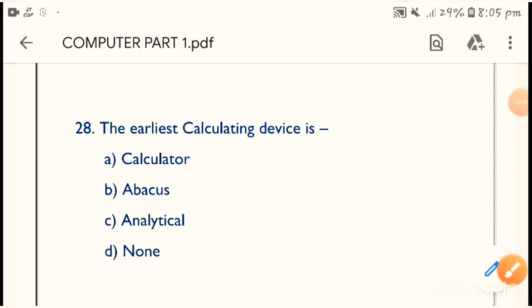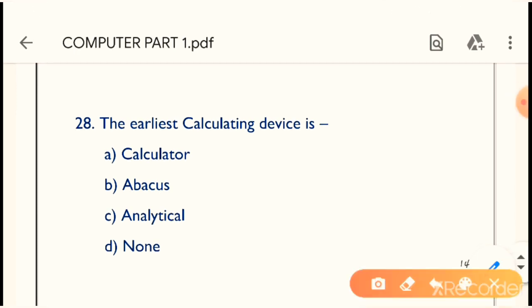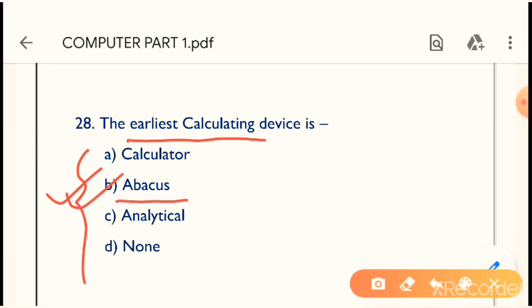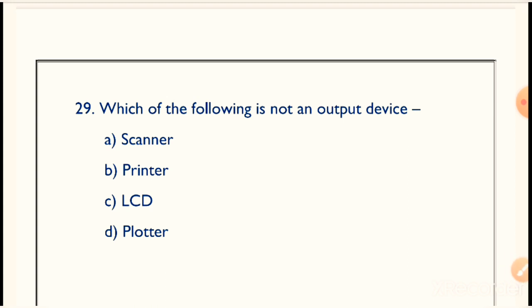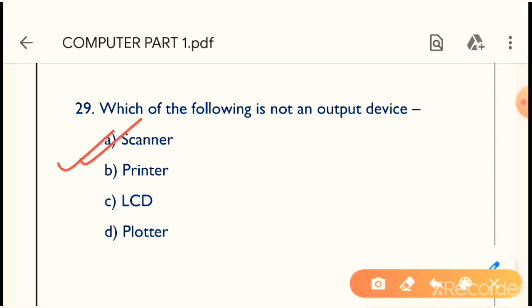Question 28: The earliest calculating device is what? What is the oldest calculating device? The correct answer is Abacus. Option B is the correct answer — Abacus is the most oldest calculating device. With Abacus we can do subtraction and addition.